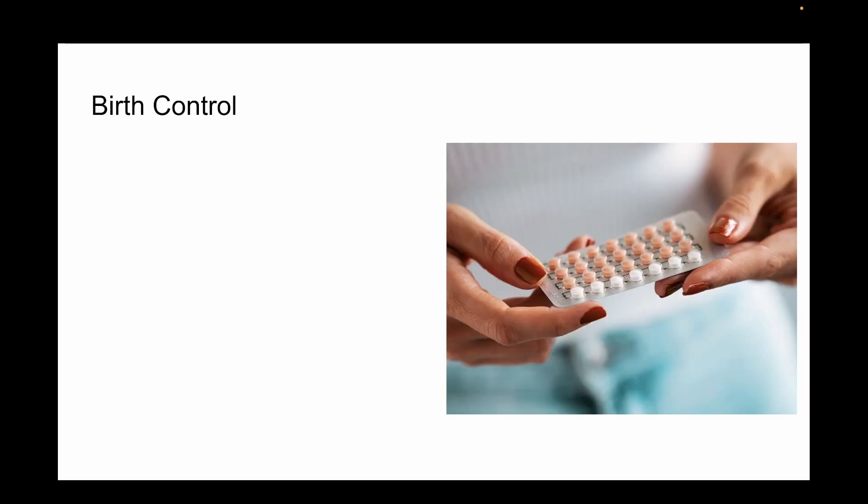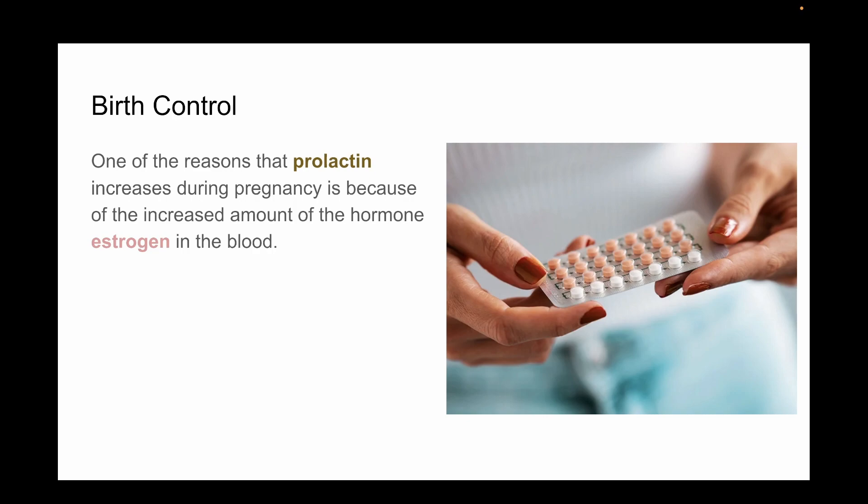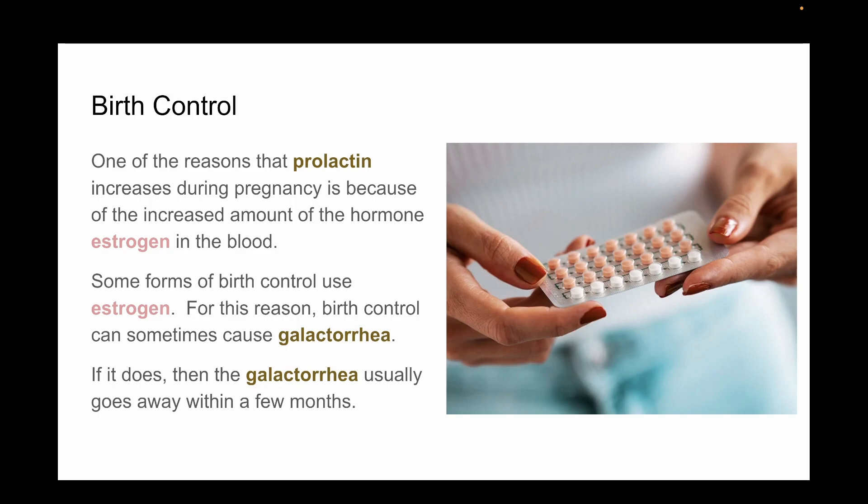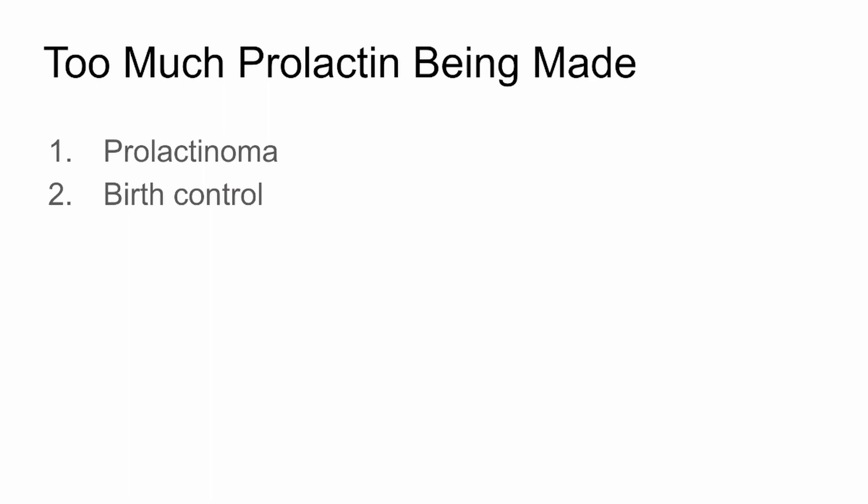Next is birth control. One of the reasons that prolactin increases during pregnancy is the increased amount of the hormone estrogen in the blood. Some forms of birth control use estrogen. For this reason, birth control can sometimes cause galactorrhea. If birth control is the reason, the galactorrhea usually disappears within a few months. That gives us a second reason.